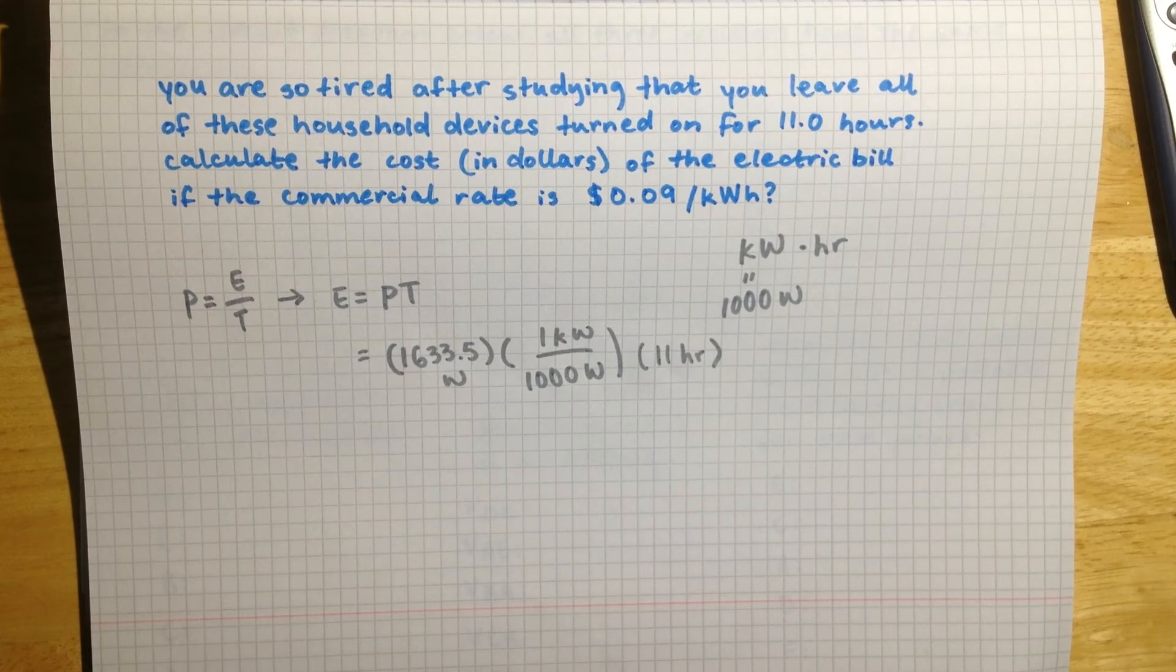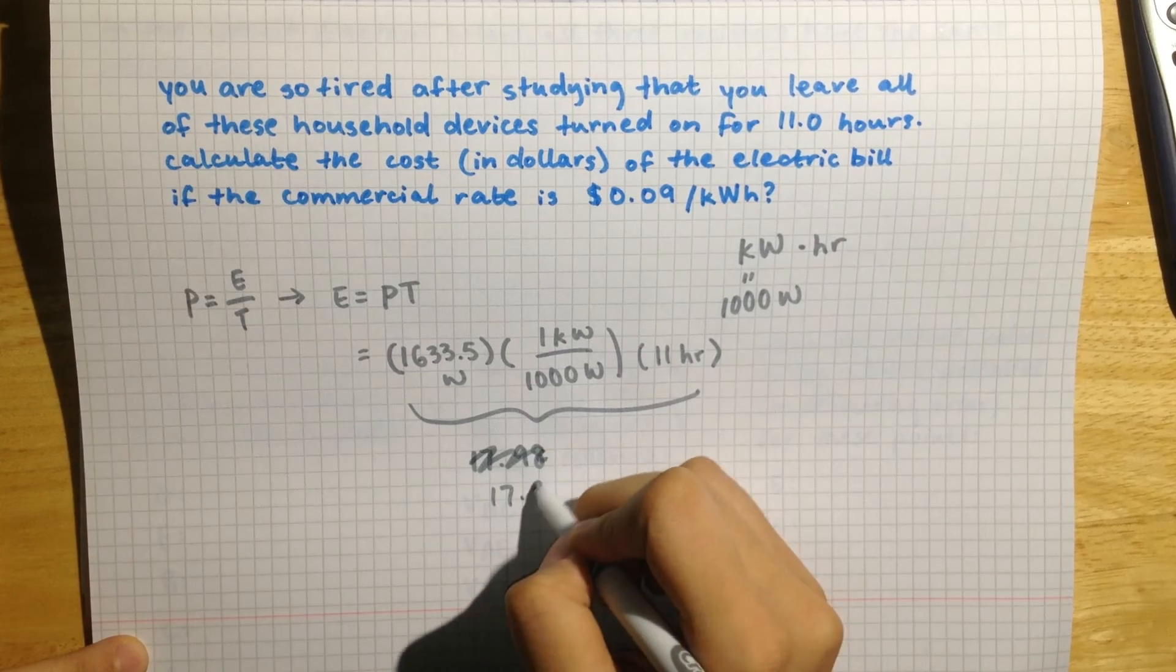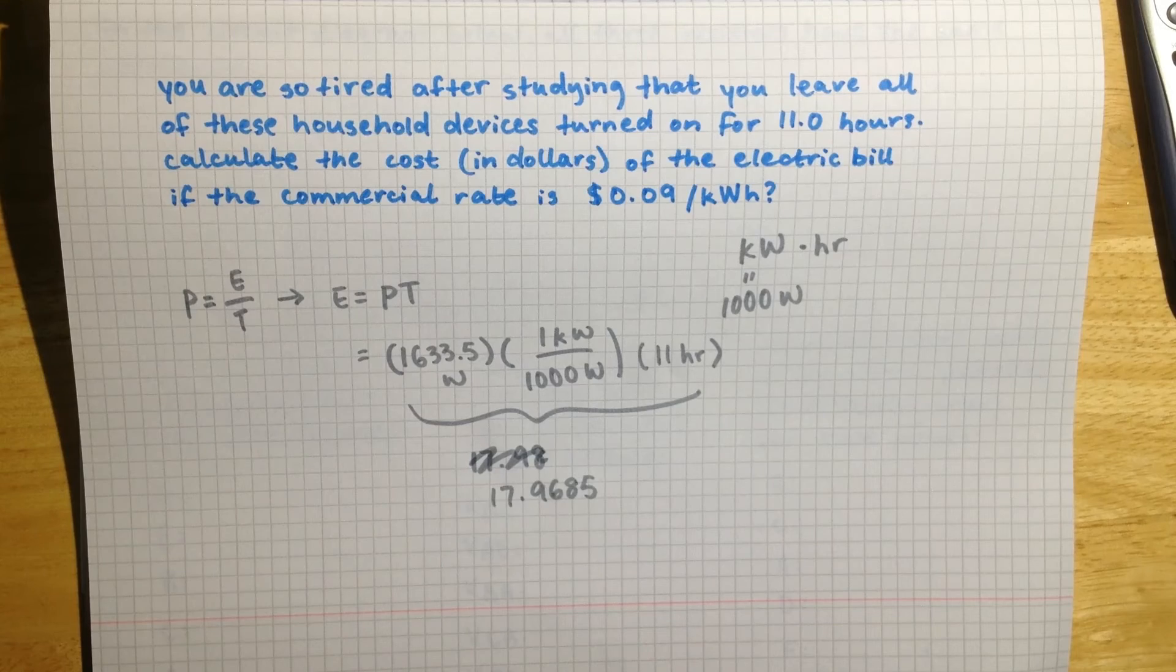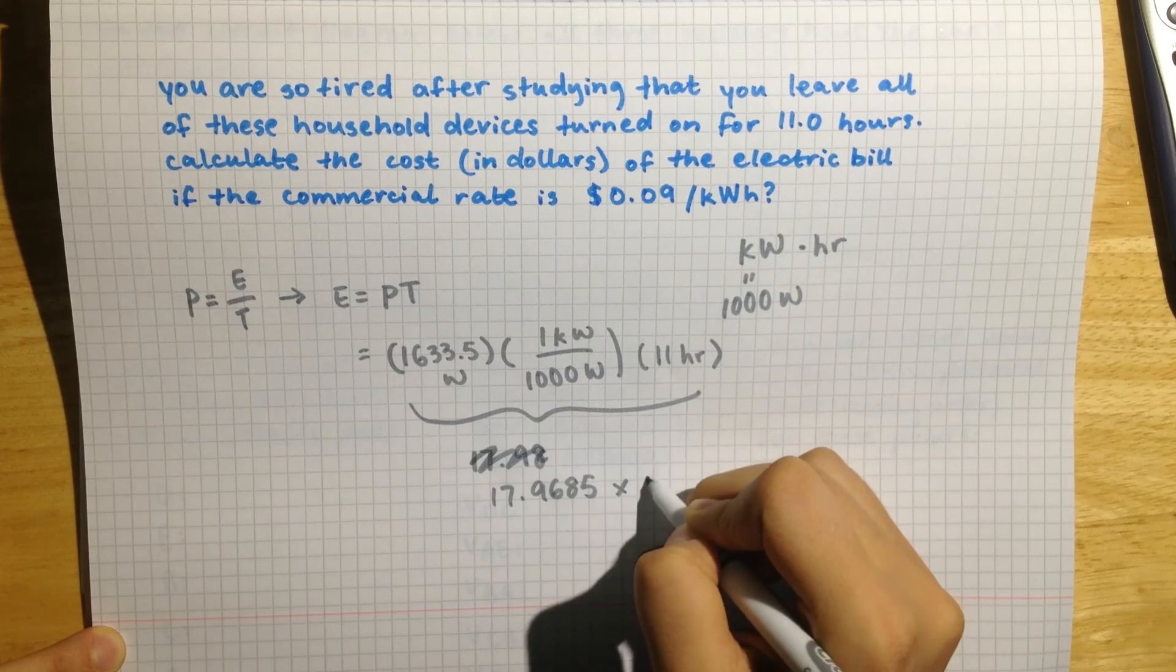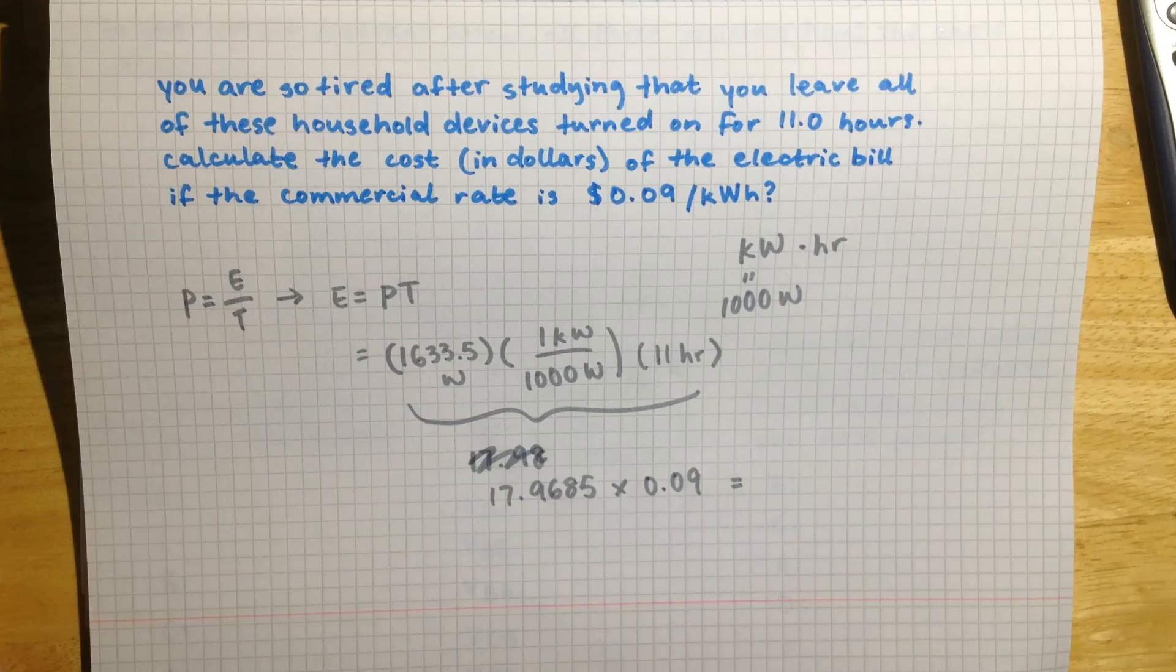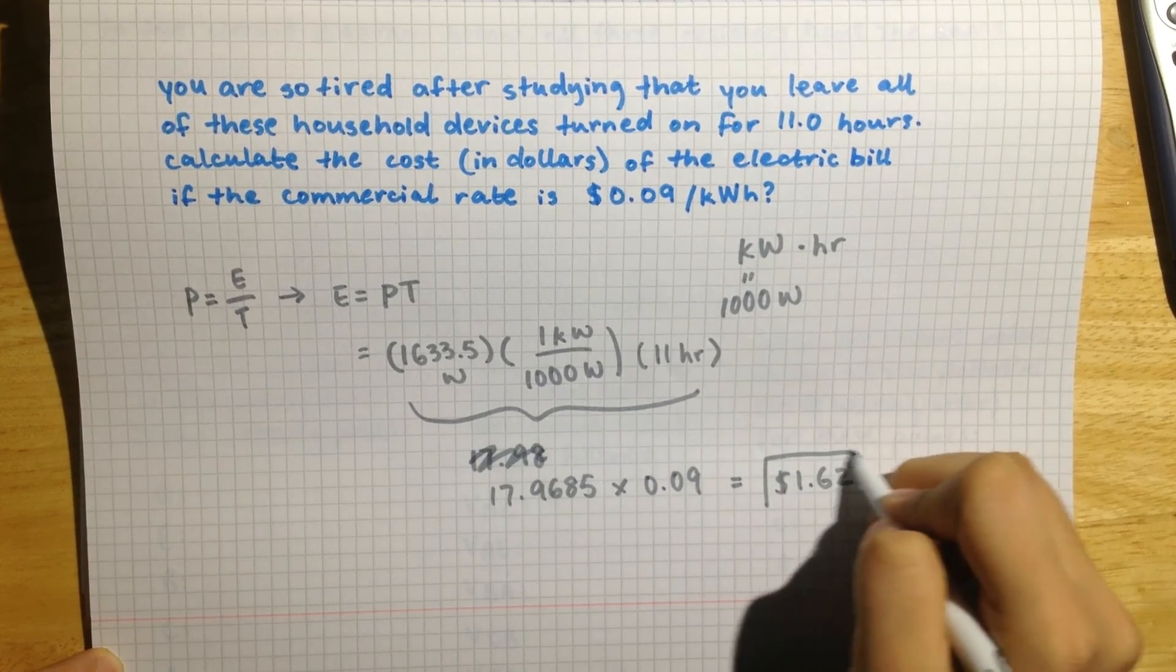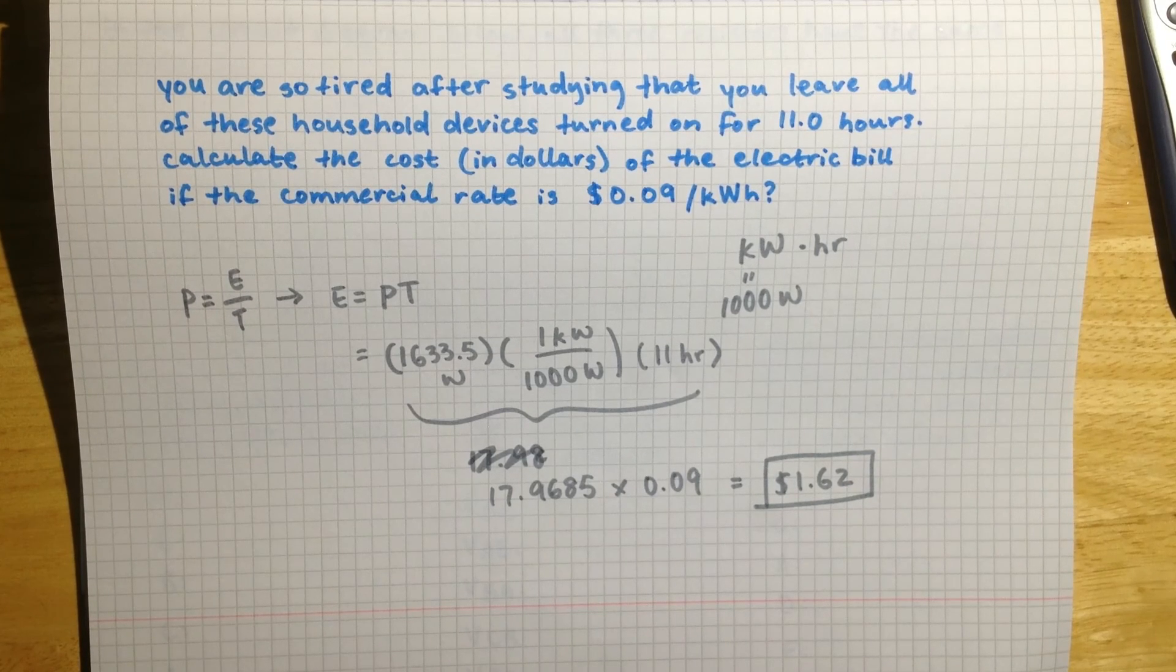And so we can put all of that into the calculator. We get a value of 17.9685, and this is how many kilowatt hours of energy we are using. And we are going to multiply that by the 9 cents, so that is just 0.09 if we do it in dollars. And we can calculate that to equal $1.62. That is how much money it is going to cost if you leave those devices on for 11 hours.